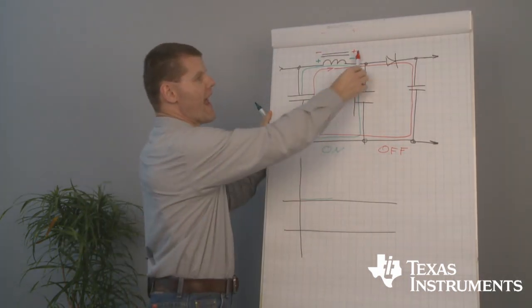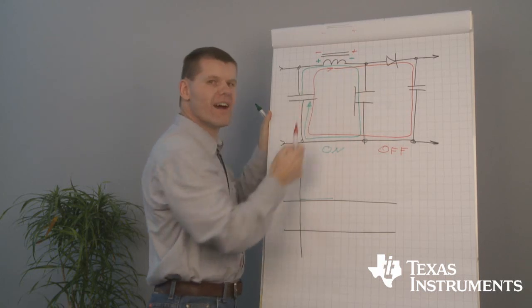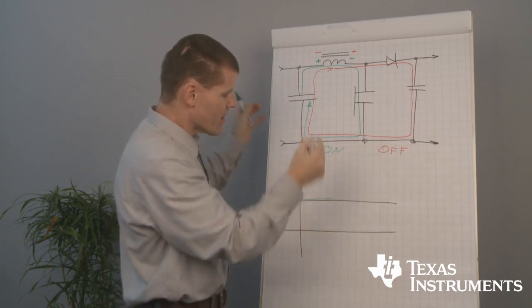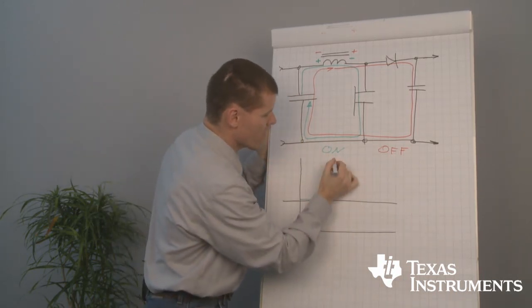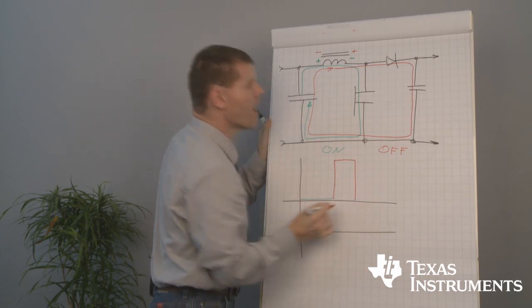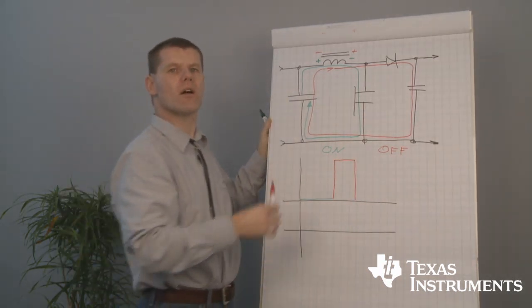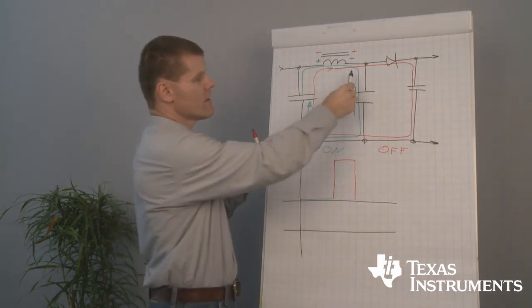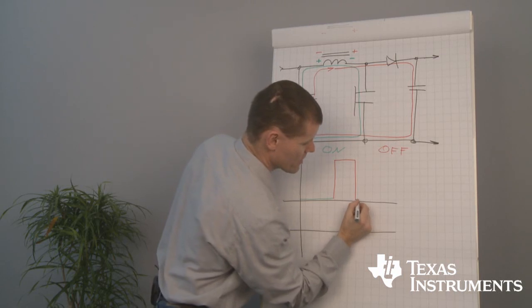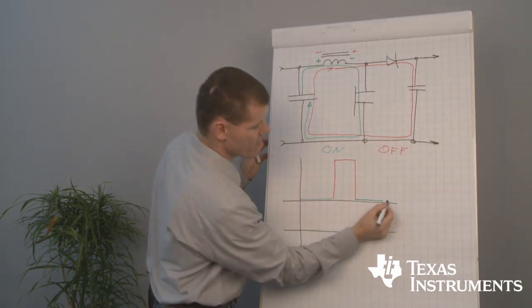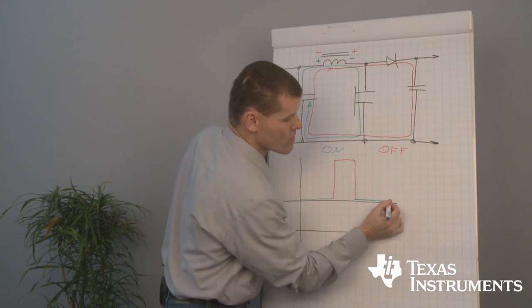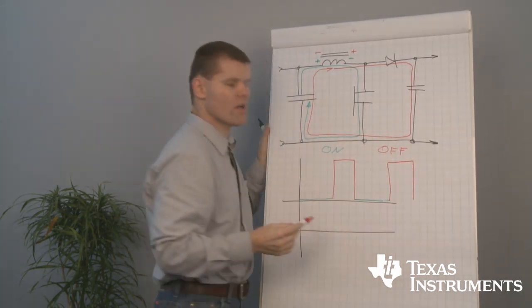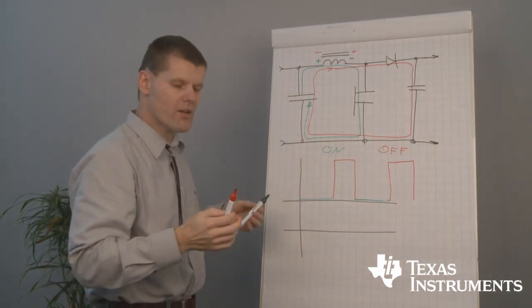And now, we are adding the inductor voltage to our input voltage. This means we are getting output voltage plus forward voltage at our switch node. And again, switch closes again. Voltage becomes zero. Switch opens. Output voltage at the switch node. That's the main understanding.